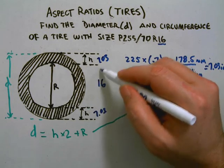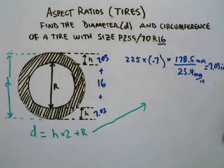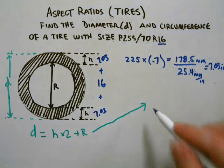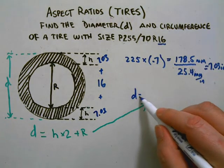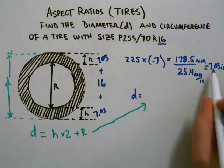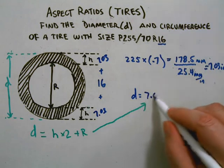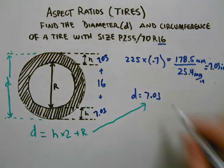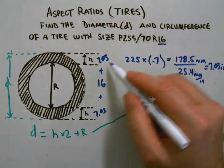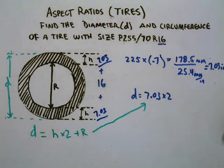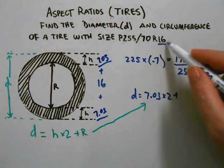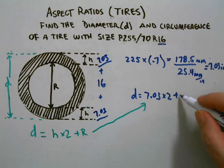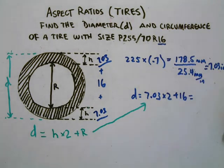So the diameter is equal to the height, which I just said was 7.03, times 2 because we have left, top and bottom, and add the rim height, which is 16. We are left with a total of 30.06 inches.